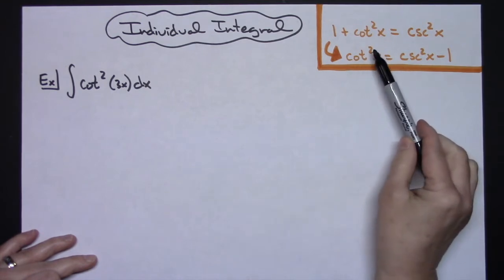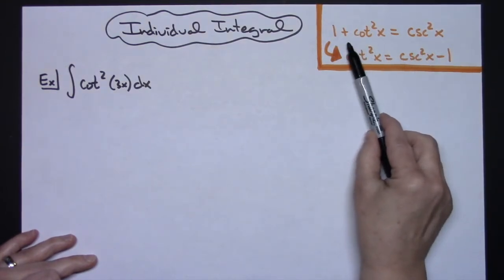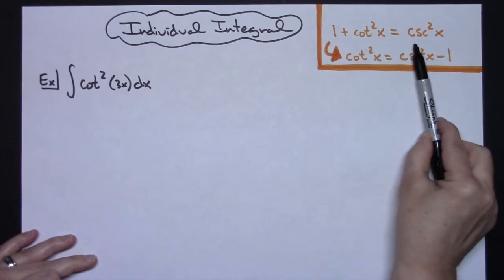I do have up here a Pythagorean identity here, 1 plus cotangent squared x equals cosecant squared x.